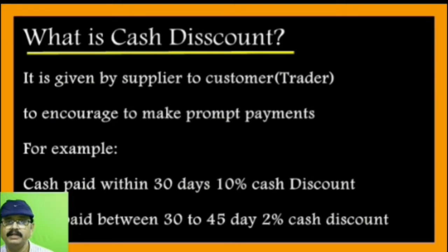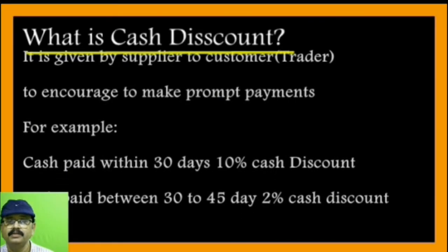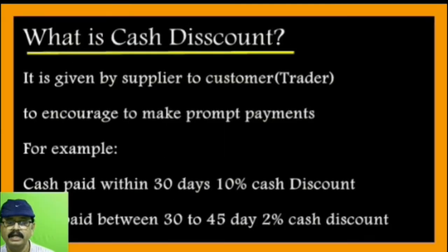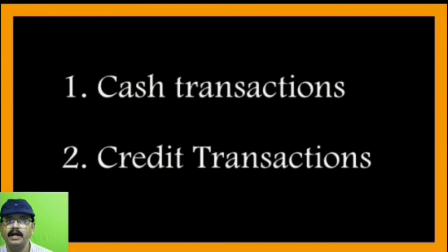Cash paid between 30 to 45 days gets only a 2% cash discount offered by the supplier. Sometimes payment may be late, so only a smaller 2% discount is offered for that period. The customer will still try to make payment within 30 to 45 days to get that 2% discount.